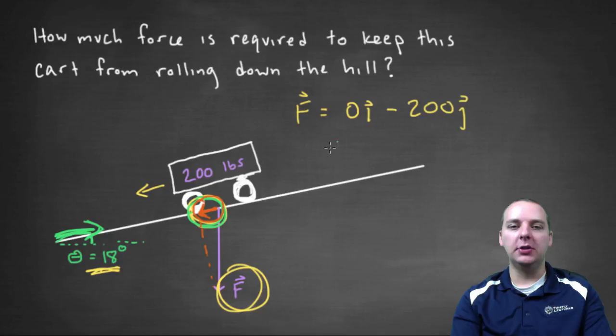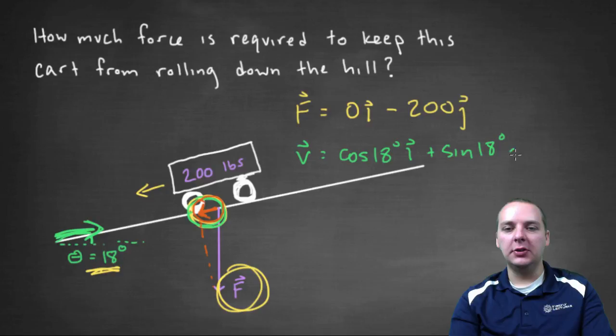The scalar is going to be changed with the projection anyway. So for our vector V, we'll just call it cosine 18 degrees i plus sine 18 degrees j. We'll just take a nice simple unit vector for that direction vector.